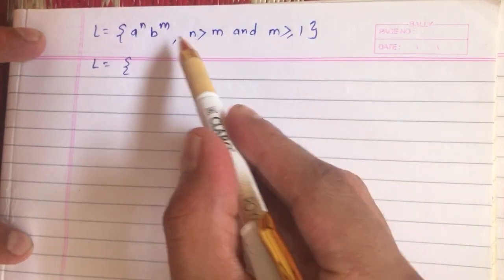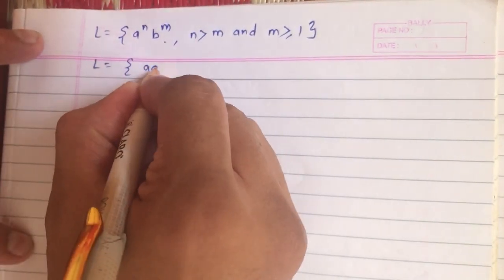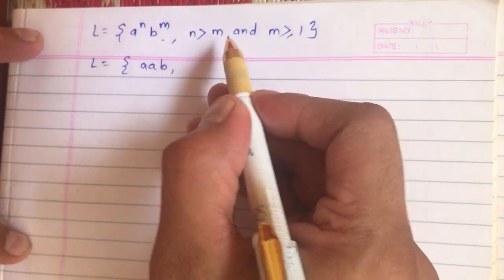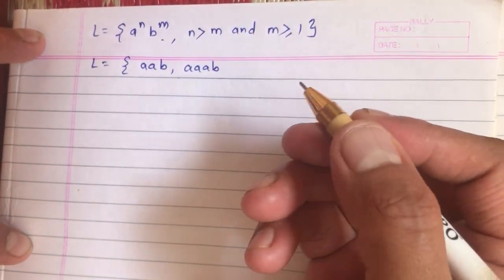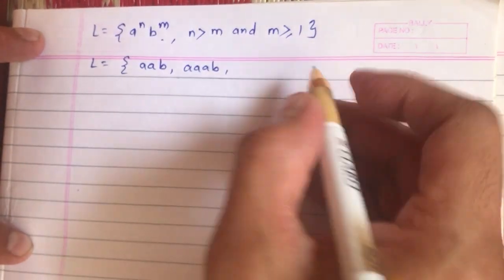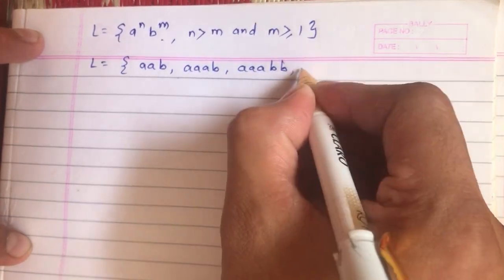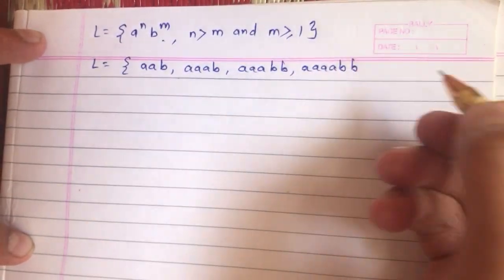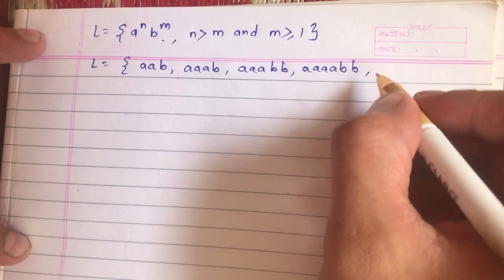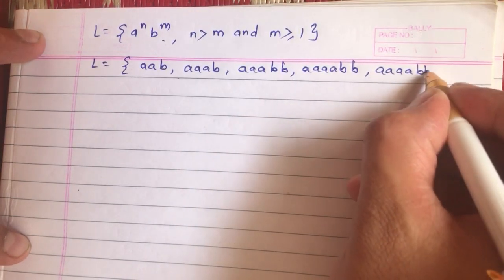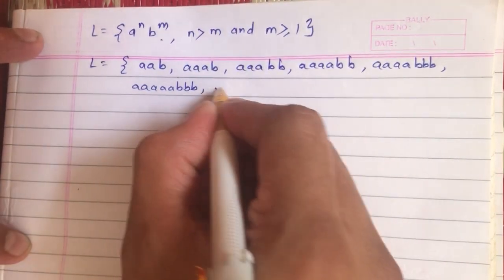The strings in this language are as follows: if m equals one, then n starts at two, giving us two a's with one b, then three a's with one b, four a's with one b, and so on. If m equals two, the minimum value of n is three, giving three a's with two b's, four a's with two b's, five a's with two b's, and so on. When m equals three, the minimum n is four, giving four a's with three b's, five a's with three b's, and so on.